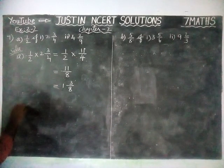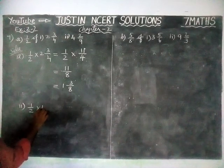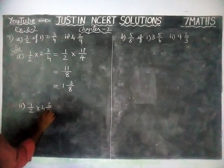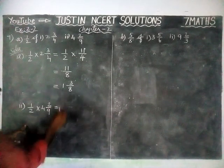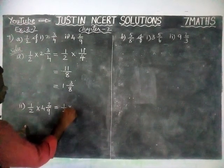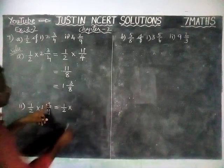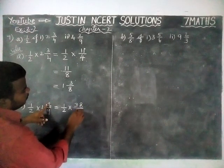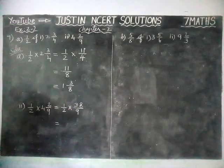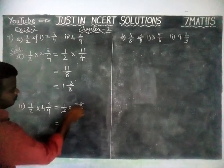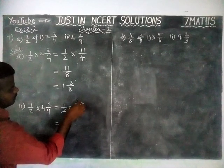Next, Roman numeral 2: 1/2 of 4 2/9. We have to convert this mixed fraction into improper fraction. So 1/2 into — 4 times 9 are 36, and 36 plus 2 is equal to 38 — divided by 9. If it is possible to simplify, we can simplify. Now, 1 times 2 is 2; here in 38, we have one 2, remaining 1.